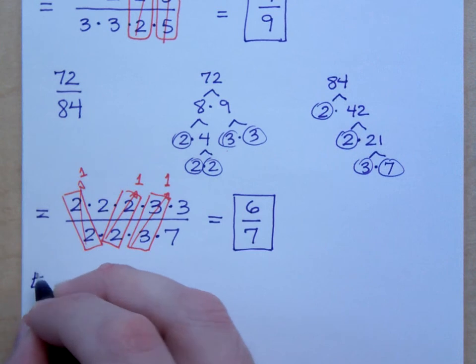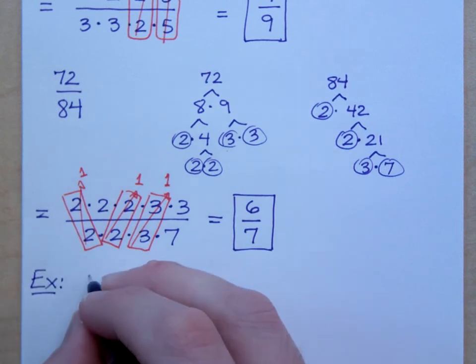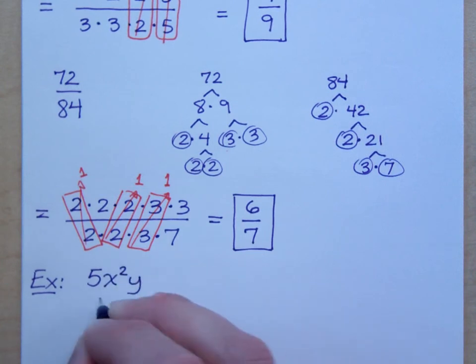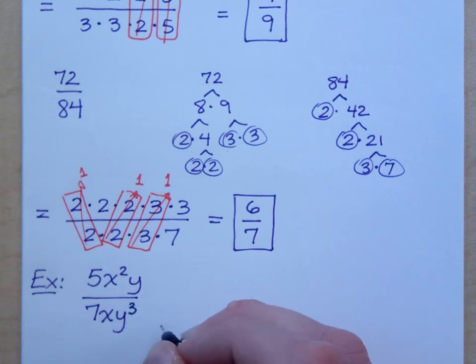But I wonder what would happen if I gave you something that was just a little bit more complicated looking. What if I gave you this? 5x squared y over 7xy cubed. I can't even finish writing the problem before you guys start sawing and huffing.